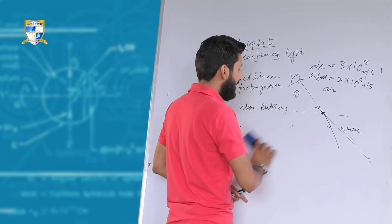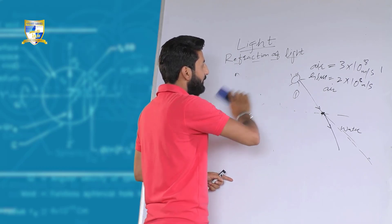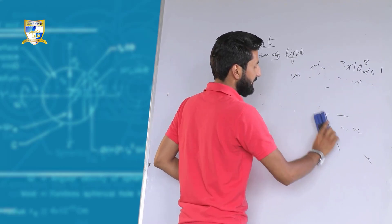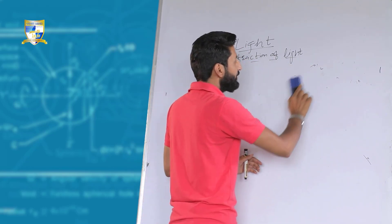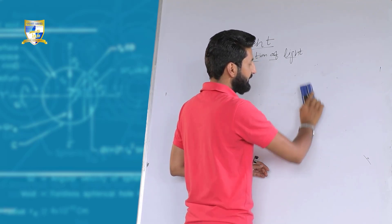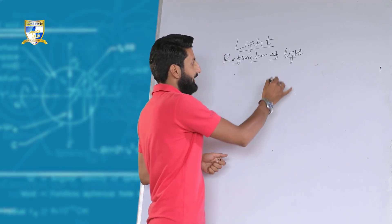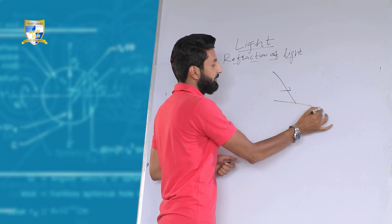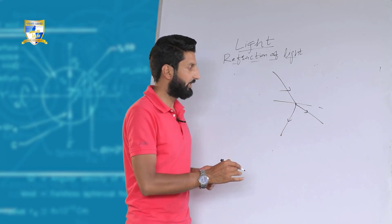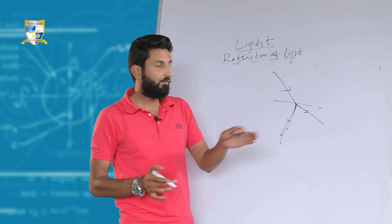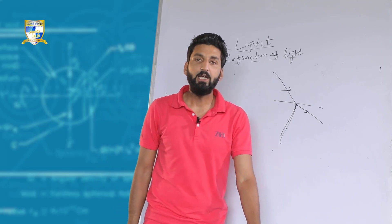Now, if we say the ray of light is getting bent, we should know the direction of bending. The question arises: which path does the light follow? Where does it get deviated? For example, a ray of light entering another medium could take various paths — but which path would light actually follow upon entering the other medium?